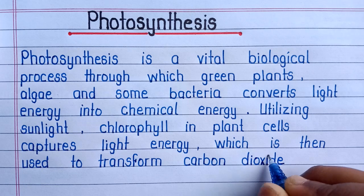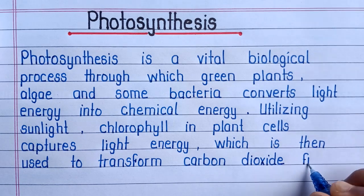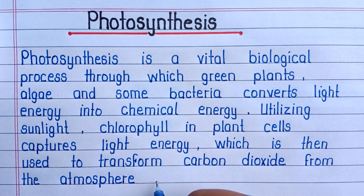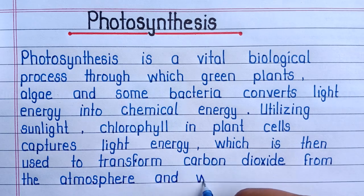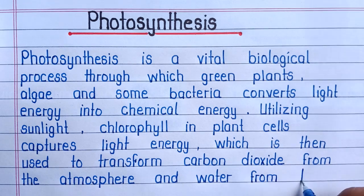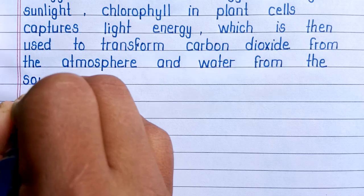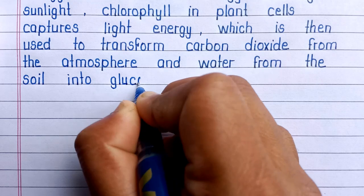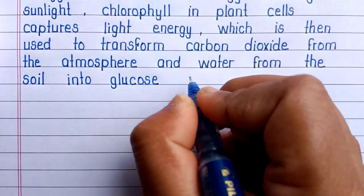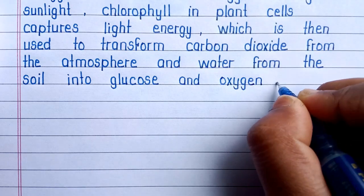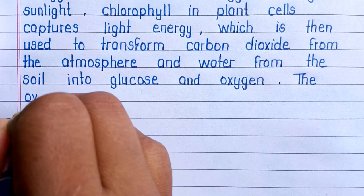The chlorophyll in plant cells captures light energy, which is then used to transform carbon dioxide from the atmosphere and water from the soil into glucose and oxygen.